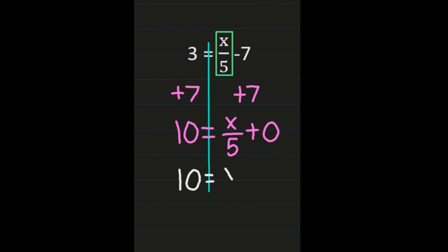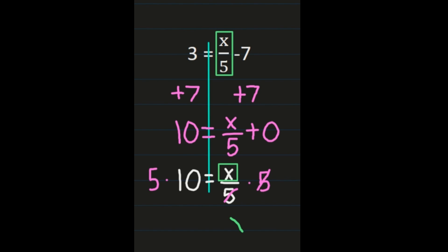Now we have a one-step equation: 10 equals x over 5. We box x to isolate the variable. Since x is divided by 5, our inverse operation is to multiply by 5. Multiplying both sides by 5: on the right the 5s simplify out leaving just x, and on the left 5 times 10 is 50. So 50 equals x. You can check by substituting 50 back into the original equation for x.